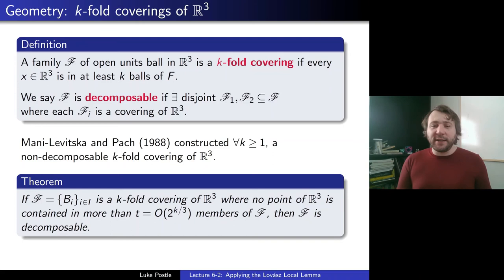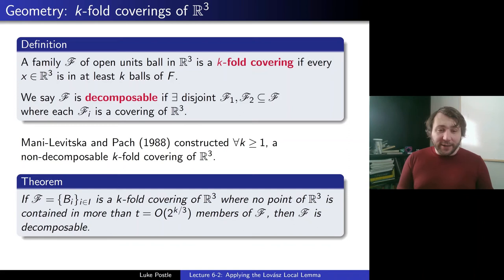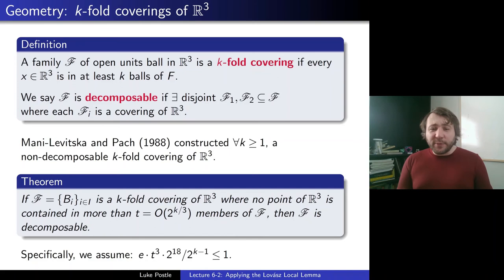It's a bit counterintuitive: their non-decomposable construction must cover some points very many times, and that's the problem. If your point gets covered too much, maybe that's what makes it impossible to decompose. Specifically, the assumption with t and k is that e·t³·2^18 / 2^(k−1) ≤ 1. You can solve for t being at most 2^(k/3) with some constant. We'll just use this inequality.